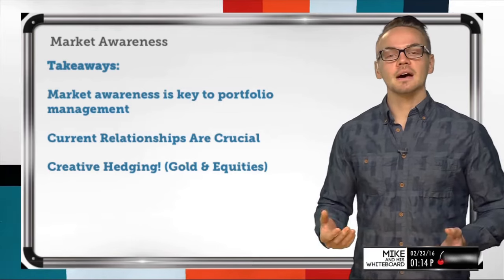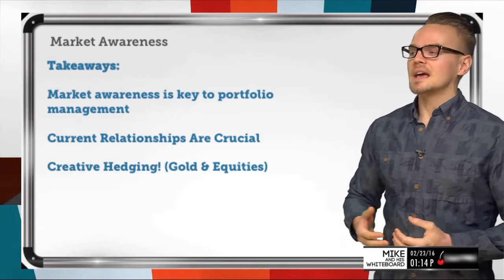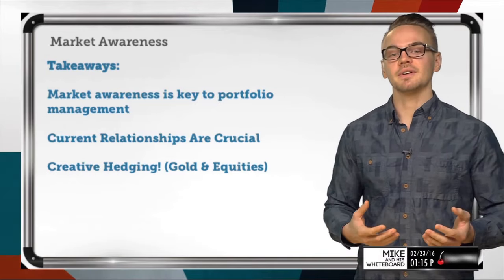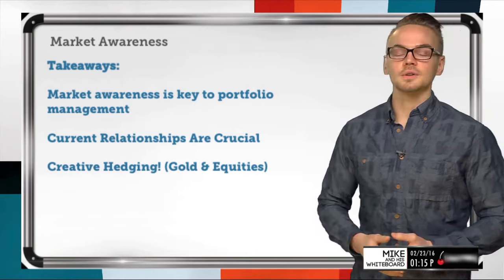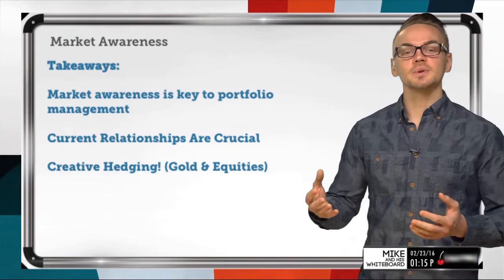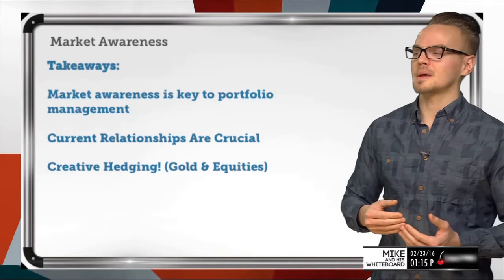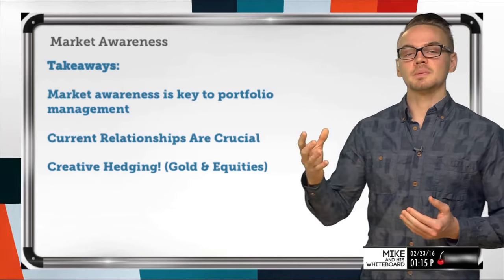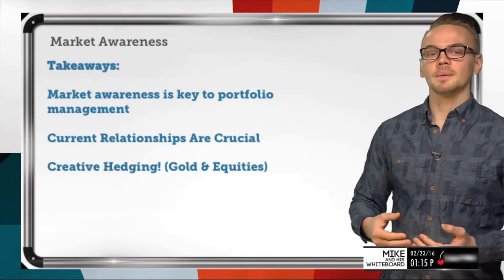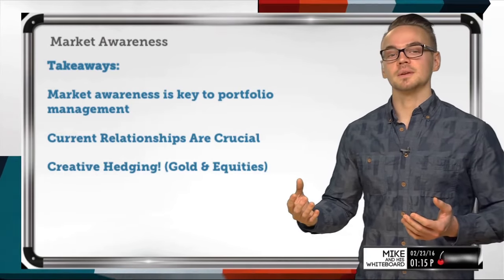Market awareness enables creative hedging. For example, gold and equities currently have a pretty negative correlation. If I sell a put in an equity strongly correlated to the S&P 500 and also sell a put in gold, that gives me exposure to both sides of the market. If the S&P goes up and I'm profitable on the equity put, I might see a loss on the gold position — but that balance is achievable using correlation and market awareness.